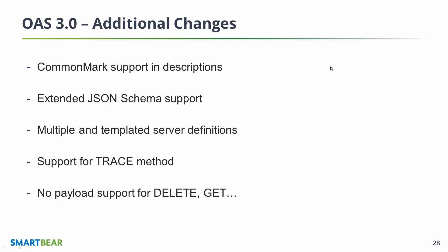You can actually template those servers. For example, if you want multiple servers in different geographical locations, you can specify that the prefix of the host is templated and give a set of possible values to that. We also added support for the TRACE method — not very commonly used in APIs, but for those who do, you can use it now.